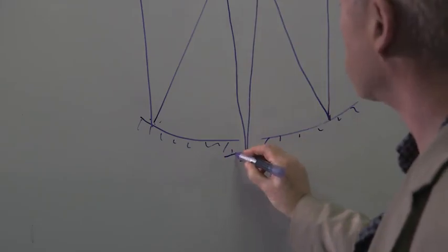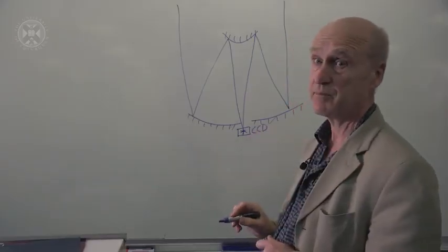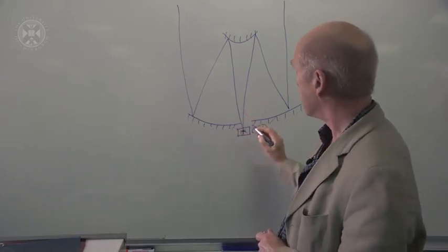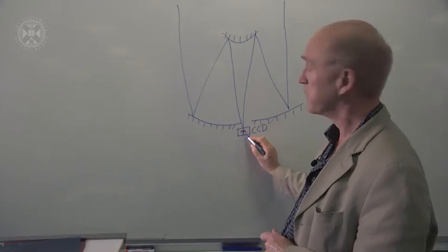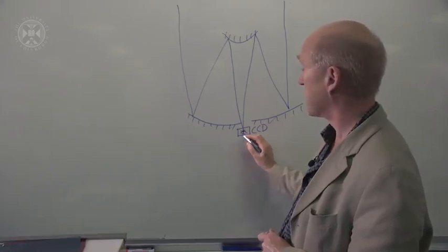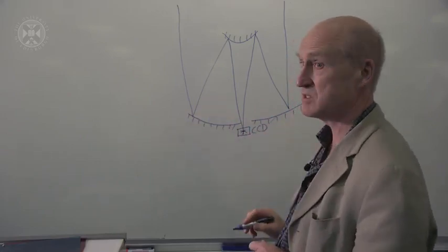That's where we place our detector, for example, a CCD camera. The CCD detector may be quite small, but the amount of light we get is determined by the size of the mirror, not by the size of the CCD.